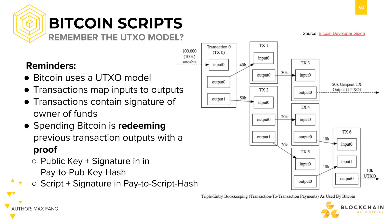Remember the UTXO model? Bitcoin doesn't have accounts with associated Bitcoin tallies. Rather, you can think of each transaction as outputs from previous transactions feeding into new inputs. Transactions contain the signature of the owner of the unspent funds. These unspent transactions are UTXOs.